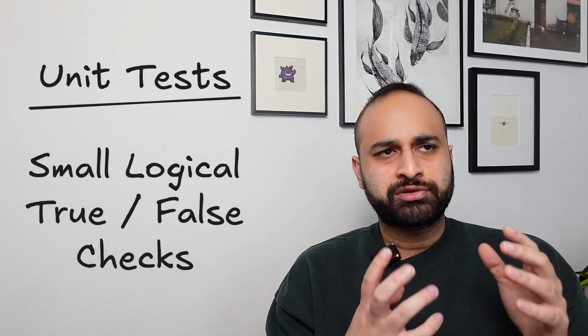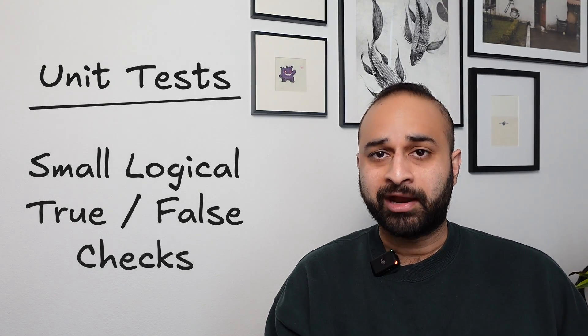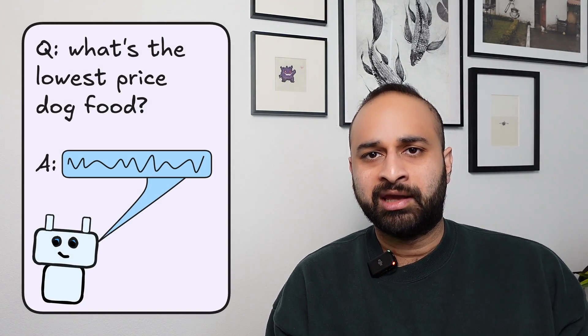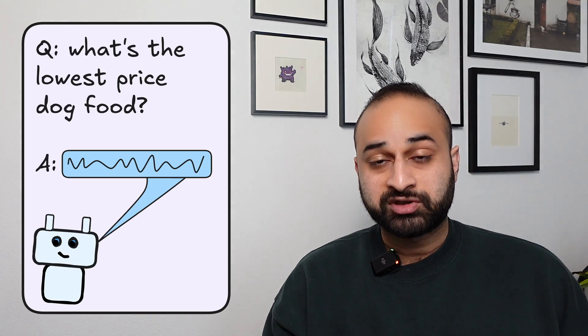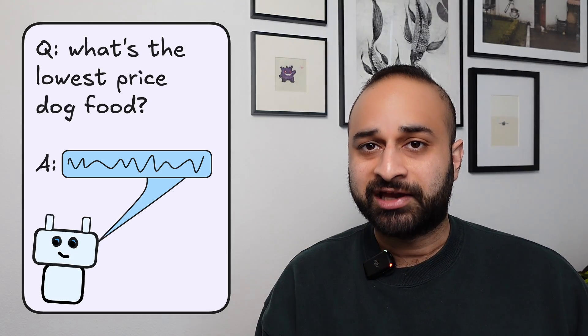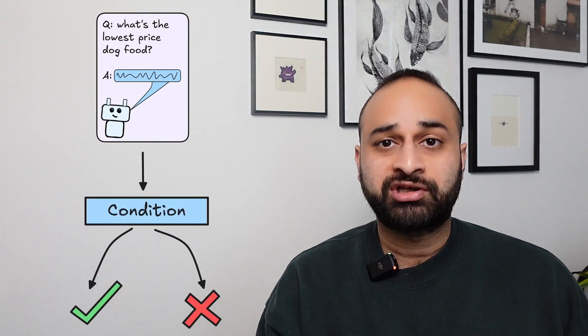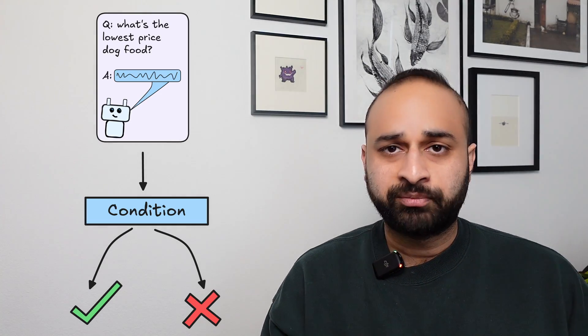Let's start at the most simple and work our way from there. At the most simple, you can fall back on the way we test normal software products using something called unit tests — small, logical, true or false tests that check whether some condition in the code is met. We can do the exact same thing with our LLM question and answer pairs. For example, if the user asks, can you give me the name of the lowest price dog food, we better respond with the lowest price dog food actually in the response. We can have that simulated question and then check if the answer coming back from the chatbot actually contains the lowest price dog food or not — true or false.